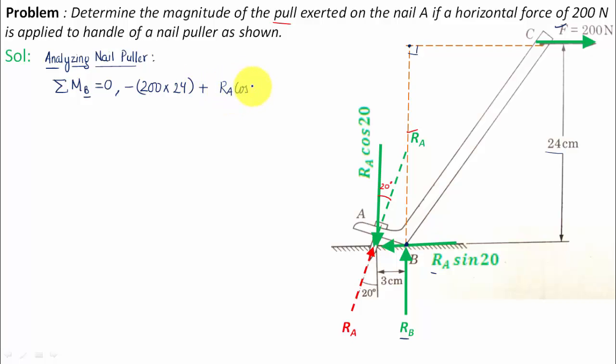If you watch carefully, this particular force, this is the force, and this is going to be the perpendicular distance. Please watch where the mouse is hovering. This small distance you see, from here to here, this small distance is the perpendicular distance which is equal to three centimeters.